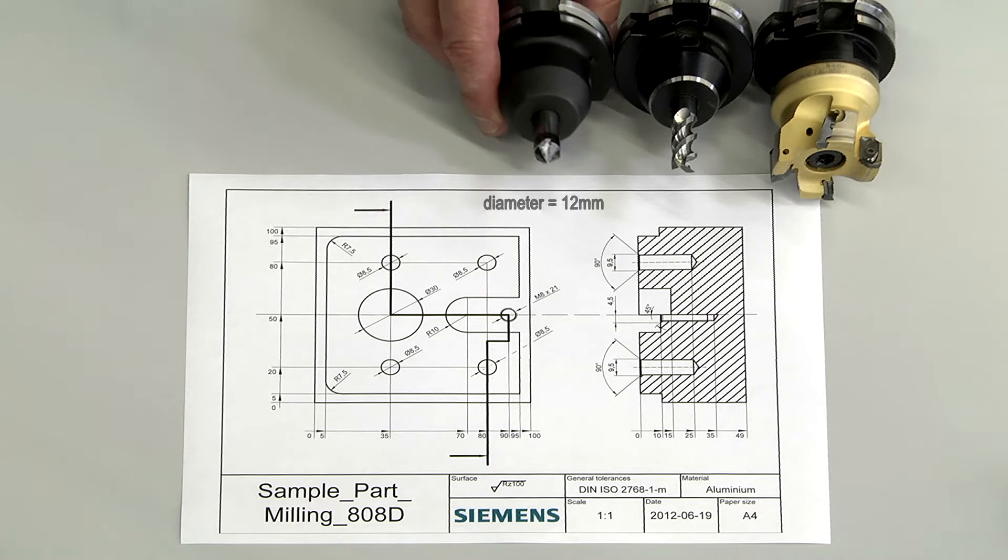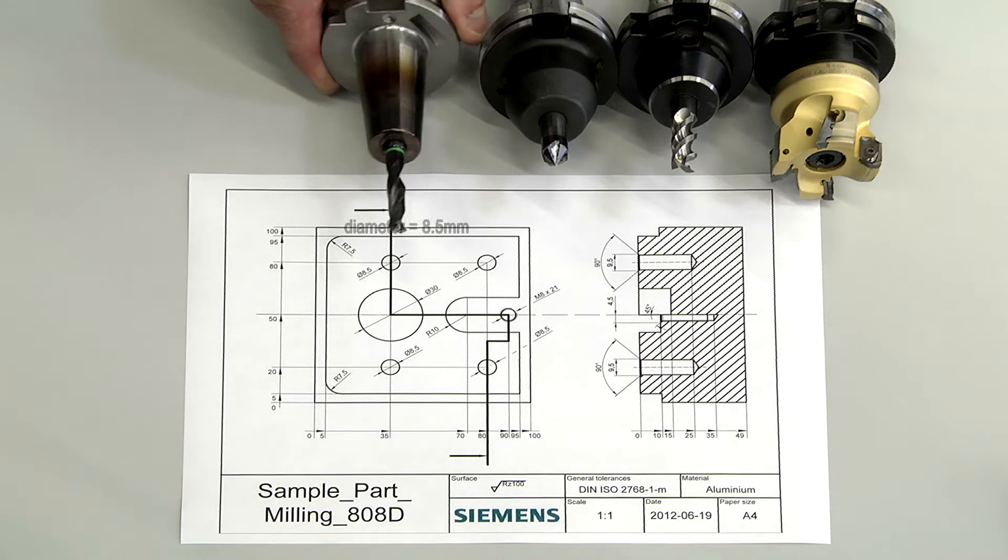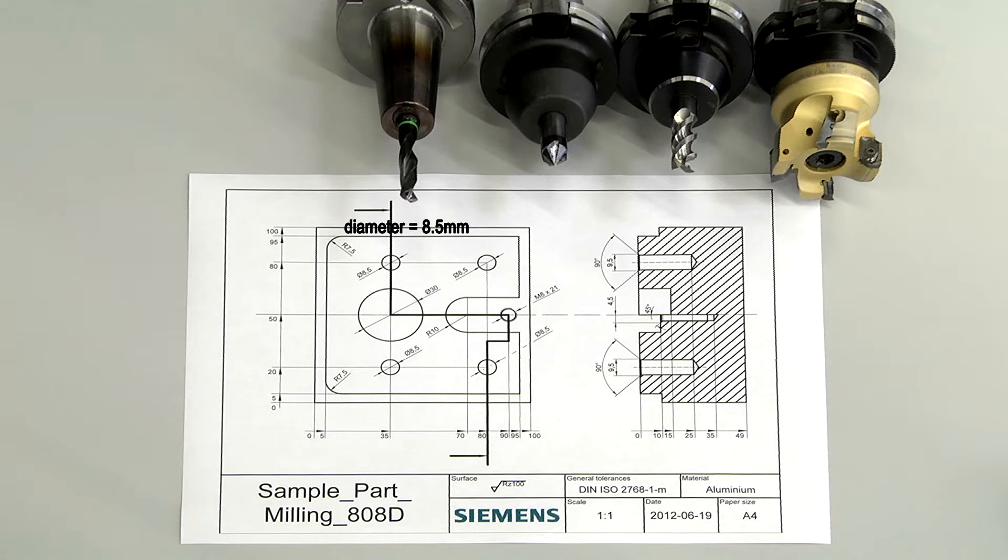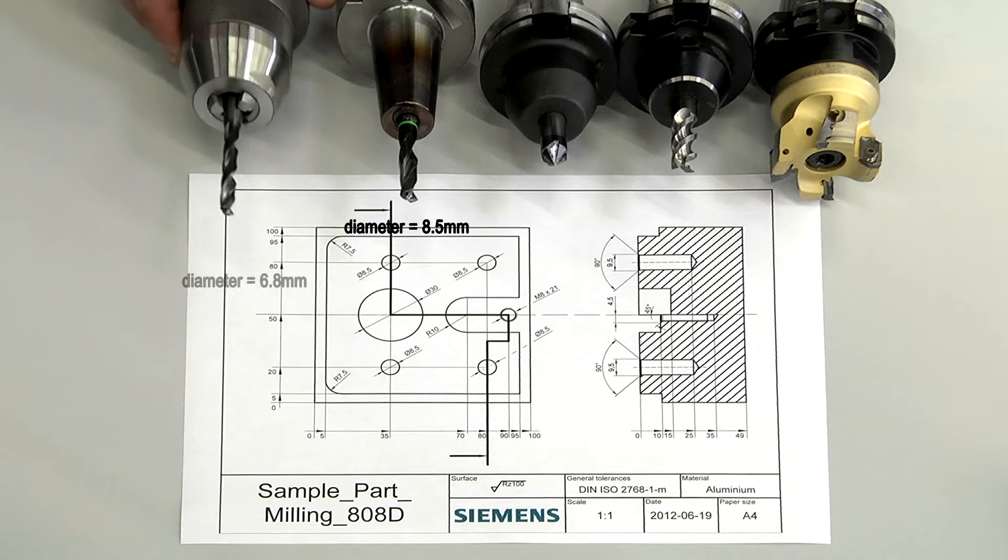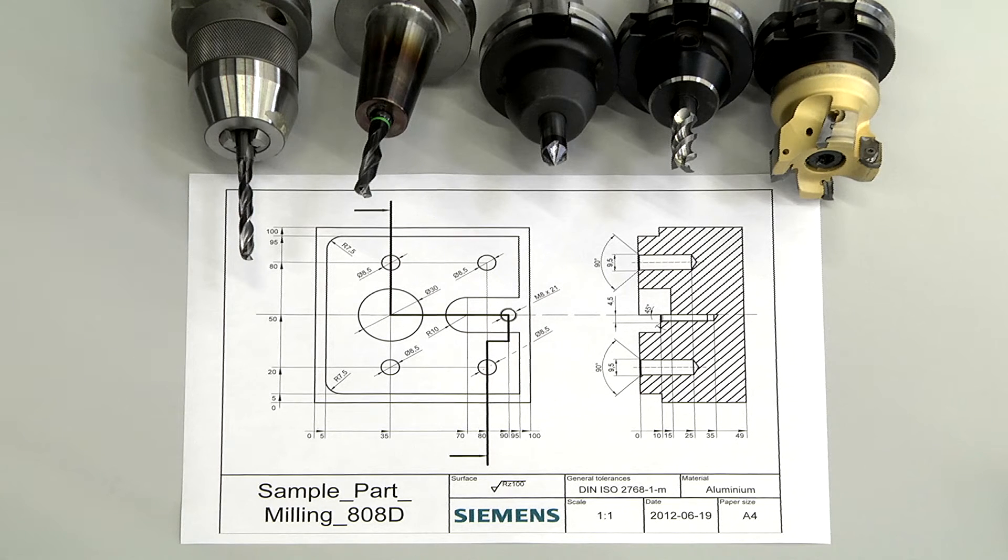A countersink with a diameter of 12mm for chamfering and centering. Two twist drills, one with a diameter of 8.5mm and one with a diameter of 6.8mm, and a tap for M8 thread.